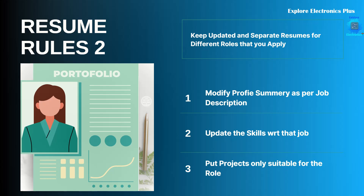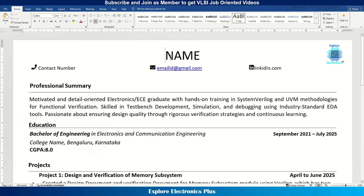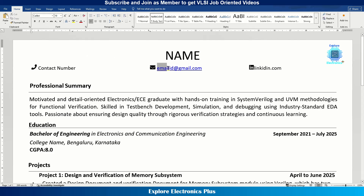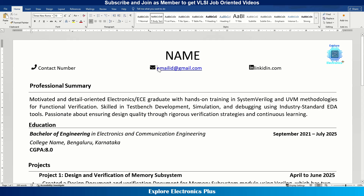Now let's look at the sample resume and see how it actually looks and what you need to put in order. The very first thing is to put your name clearly as per your documents — including surname and family name. Your contact number should be visible at the top and should be a reachable number; if you have two or three numbers, just put one. Your email ID should be readable — don't use date of birth or place name, just your name with an additional keyword so it's easily typeable.